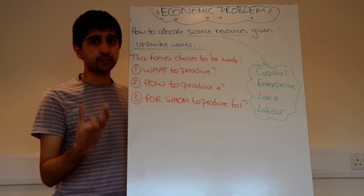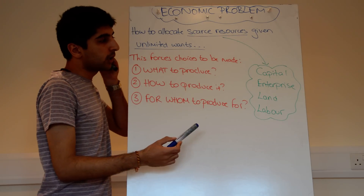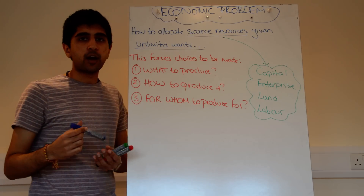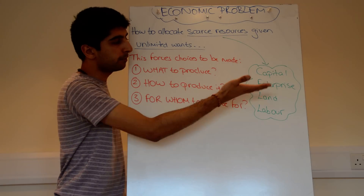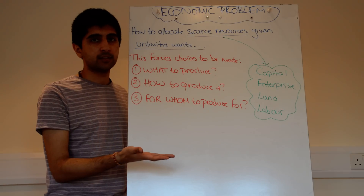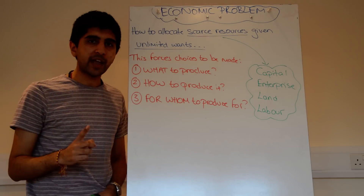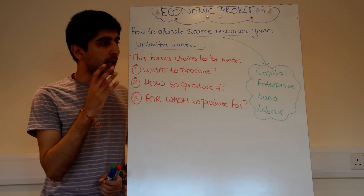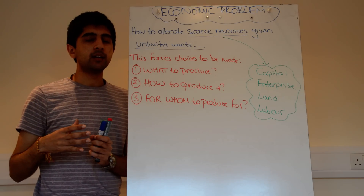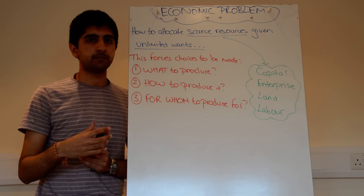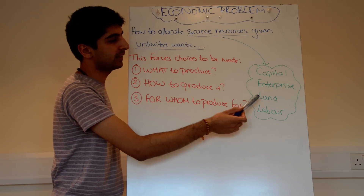Resources are scarce. What do we mean by scarce resources? Well, we can categorise our scarce resources into four main headings. These four things are known as the factors of production. They are inputs which, when combined together, can produce goods and services. These four things are: capital, enterprise, land, and labour.